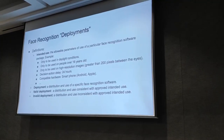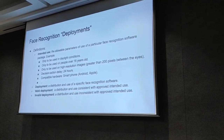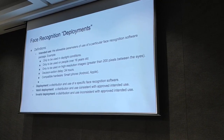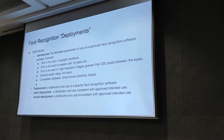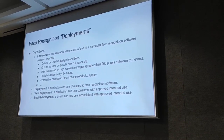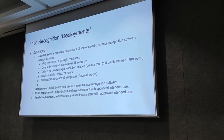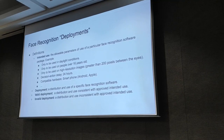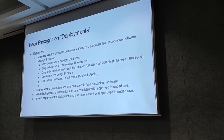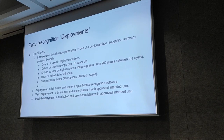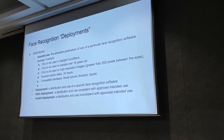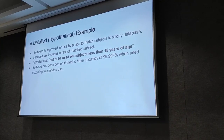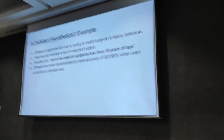The intended use could be totally different for a different piece of software. Maybe a particular piece of software can run on smartphones only. So a deployment is a distribution and use of a specific piece of face recognition software. A valid deployment is a distribution and use consistent with the approved intended use, and an invalid deployment is using it in a way that's inconsistent with the approved intended use. Let's look at an example to think about some of the issues that come up when you start trying to define this.